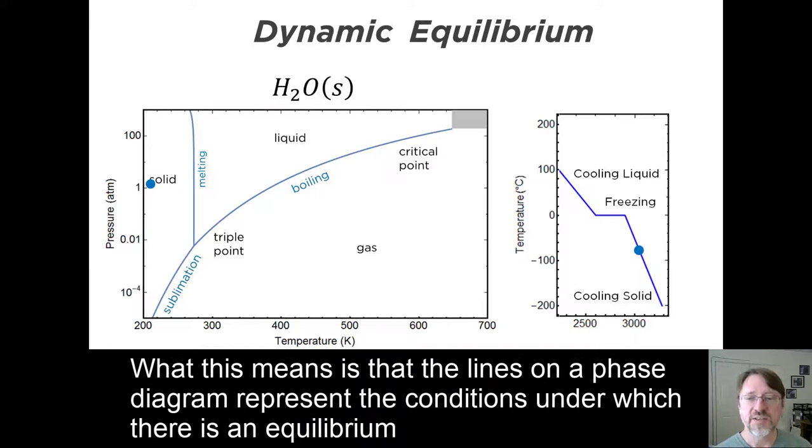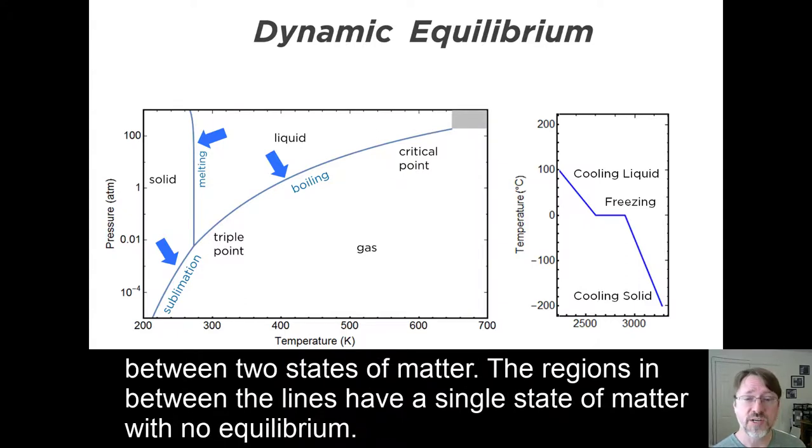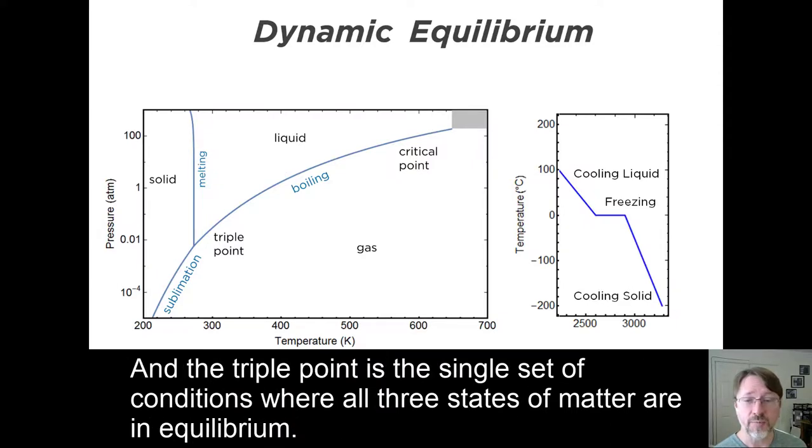What this means is that the lines on a phase diagram represent the conditions under which there is an equilibrium between two states of matter. The regions in between the lines have a single state of matter with no equilibrium, and the triple point is the single set of conditions where all three states of matter are in equilibrium.